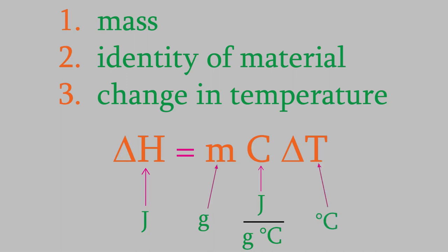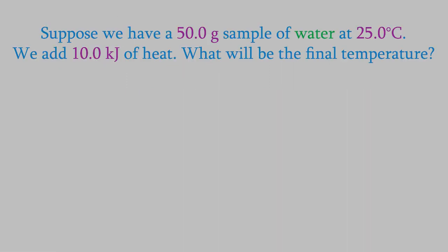Let's use this equation to try to solve a few problems. Suppose we have a 50 gram sample of water at 25 degrees Celsius. If we add 10.0 kilojoules of heat, what will be the final temperature of the water? We'll use the equation that we just looked at for this problem. We're trying to find out the final temperature, so we'll need to find delta T. That means we need to know delta H, m, and C.